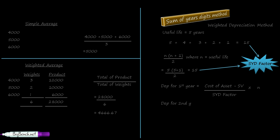For the second year, the first part remains the same: cost of asset minus scrap value divided by SYD factor. But for the second year the weight applied is 4, written as n minus 1, that is 5 minus 1 equals 4. You continue calculating this for each subsequent year. Obviously, the amount of depreciation will be different for each year.